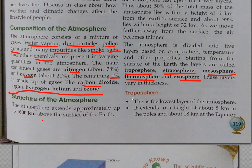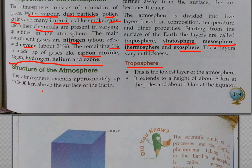Now let's talk about the Troposphere. This is the lowest layer of the atmosphere. It extends to a height of about 8 km at the poles and about 18 km at the equator.